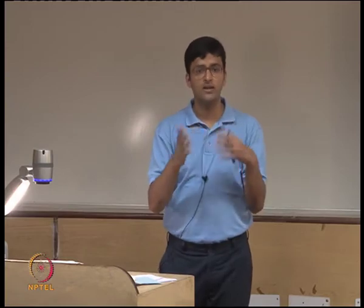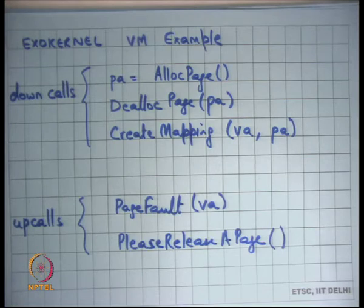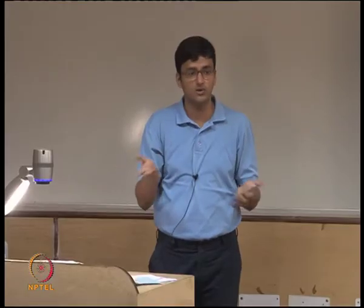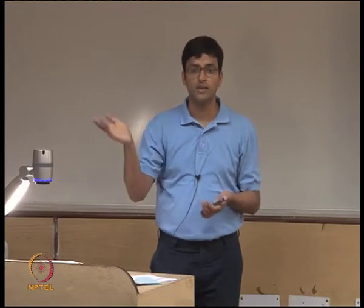The application chooses which page to release and then calls de-alloc page on that particular page. To make sure this is safe, there can be another up call that says 'force release a page' for a particular physical address — and the application had better honor that, otherwise it will probably get a segfault very soon.